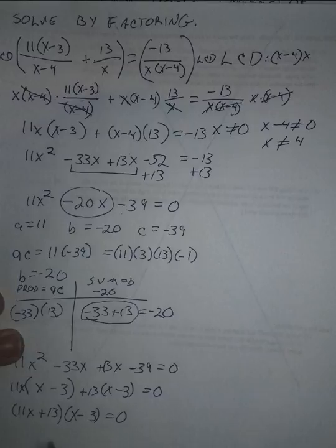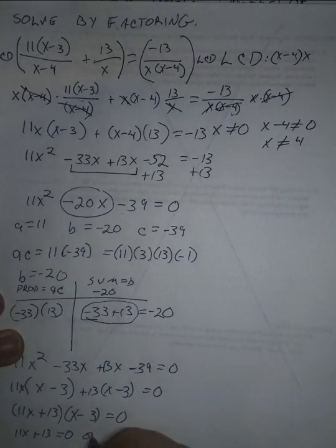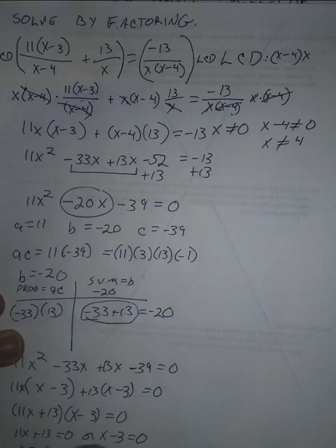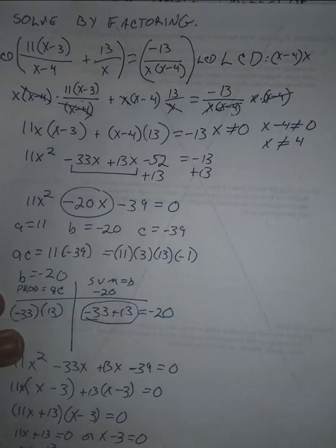So at this point we can solve two linear equations using the zero product property. 11x plus 13 equals 0, or x minus 3 equals 0. That gives us x equals negative 13 over 11, or x equals 3.